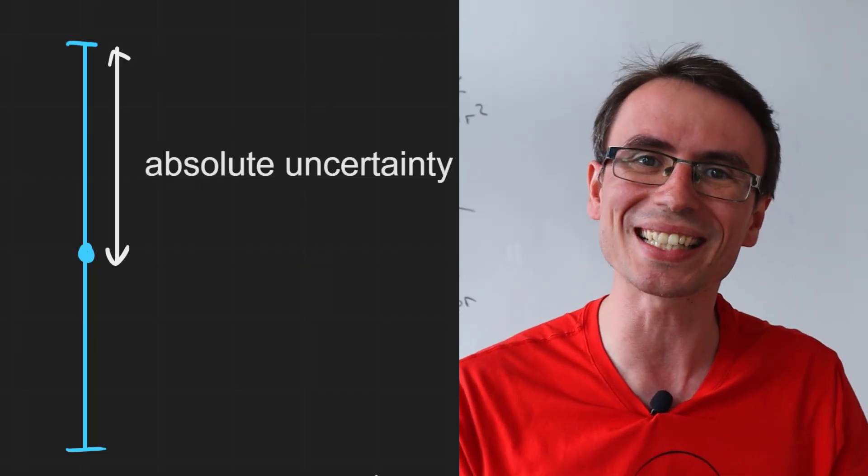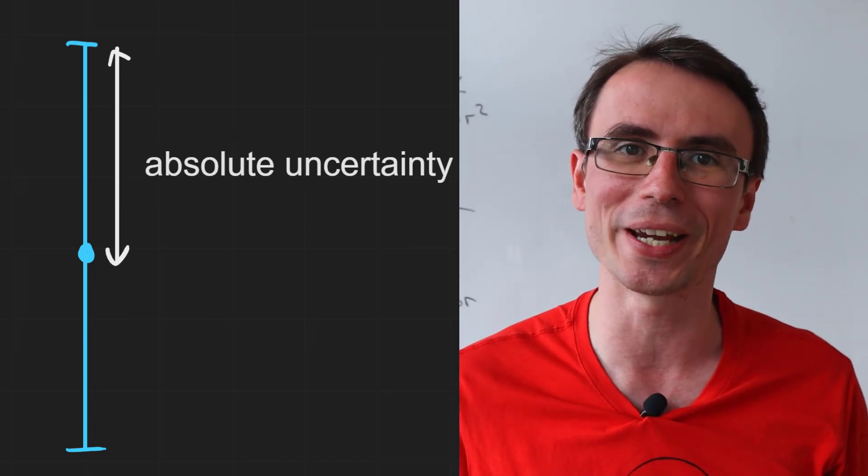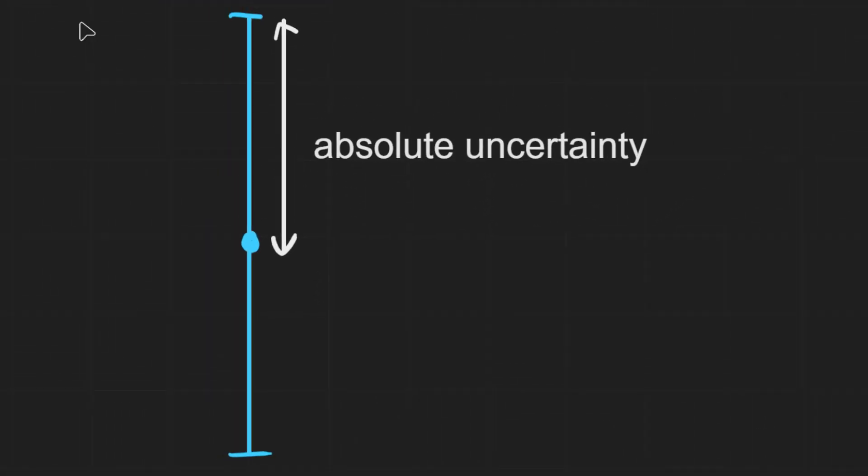Well, it shows us the absolute uncertainty. If you go one way from a point or another way from a point, i.e., the real point is somewhere within that error bar and half of its length is equal to the absolute uncertainty.